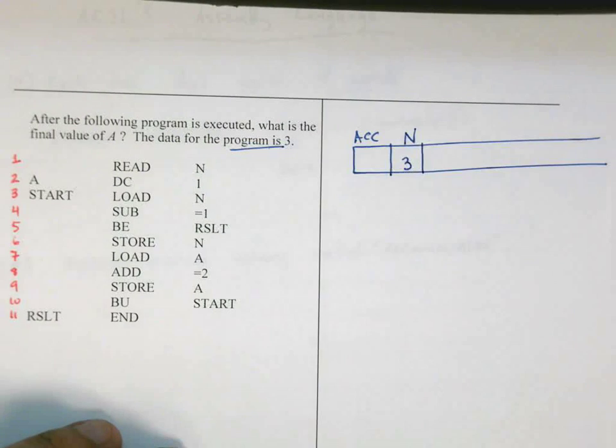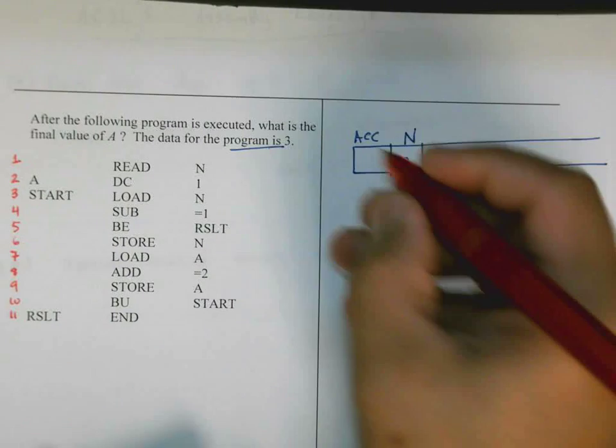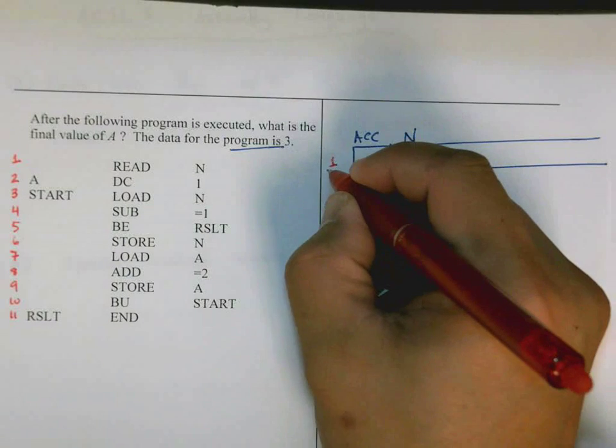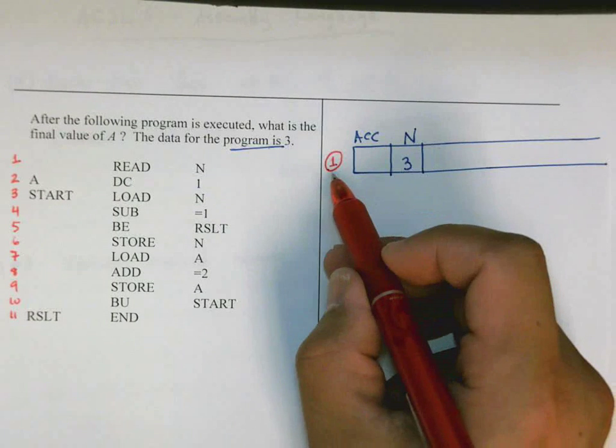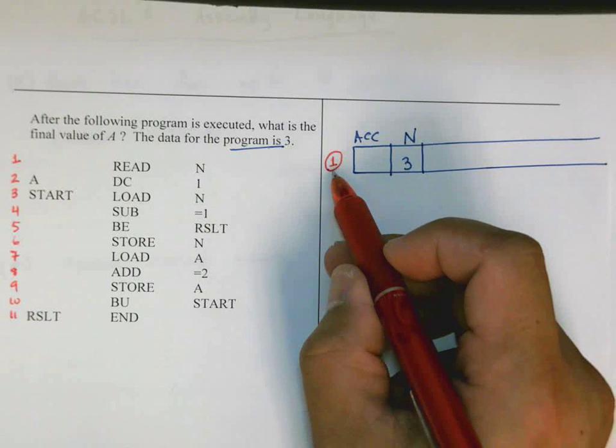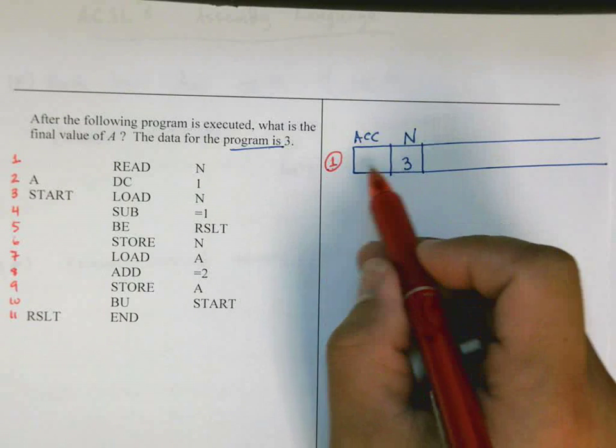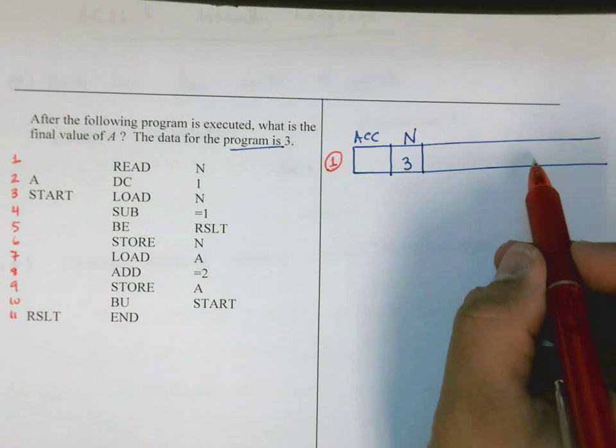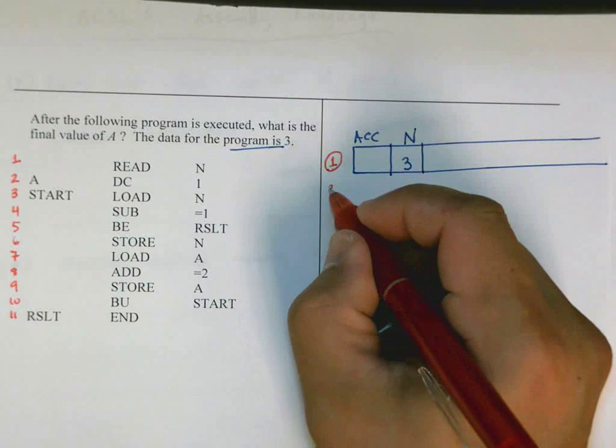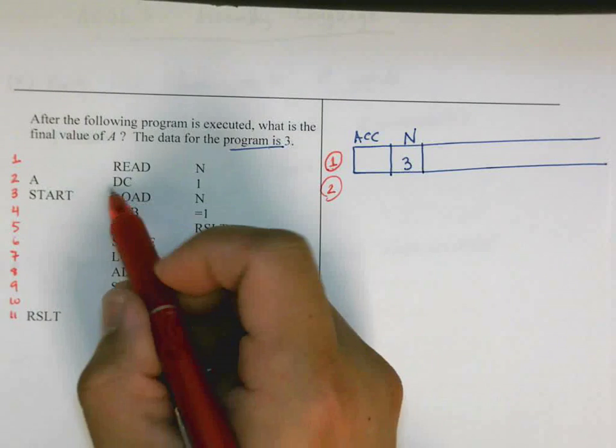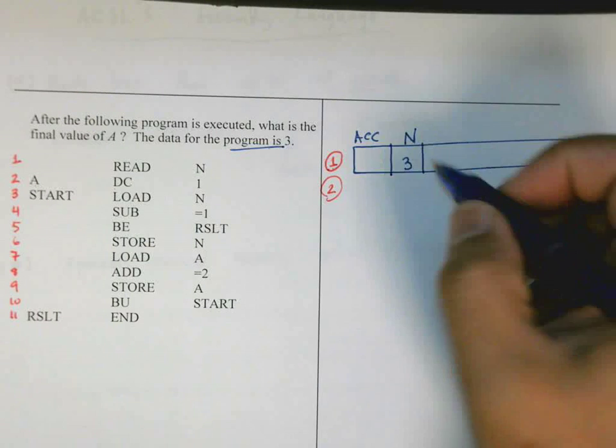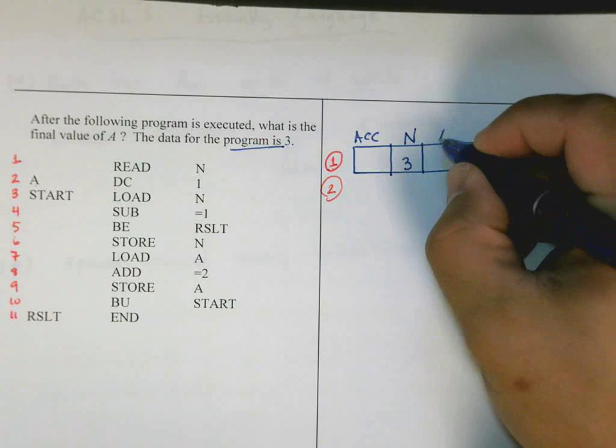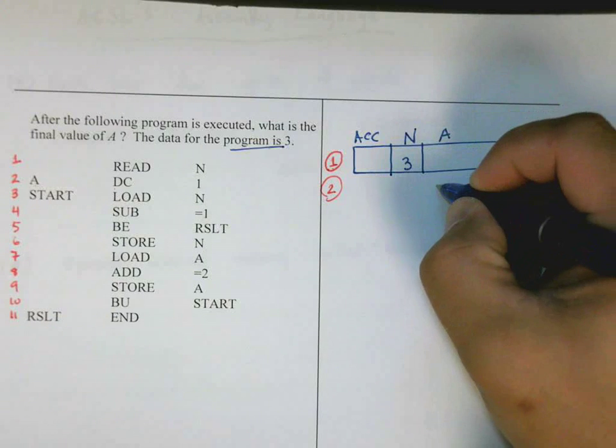So N contains three, and that's the end of line one. So I'm going to write the line numbers here in red, and I'm going to circle it to indicate that it's the line number. So after line one, this is what the memory space looks like. After line two, we declare a variable called A, and we store one in there. So after line two, we declare a variable called A, and we store a one in there.